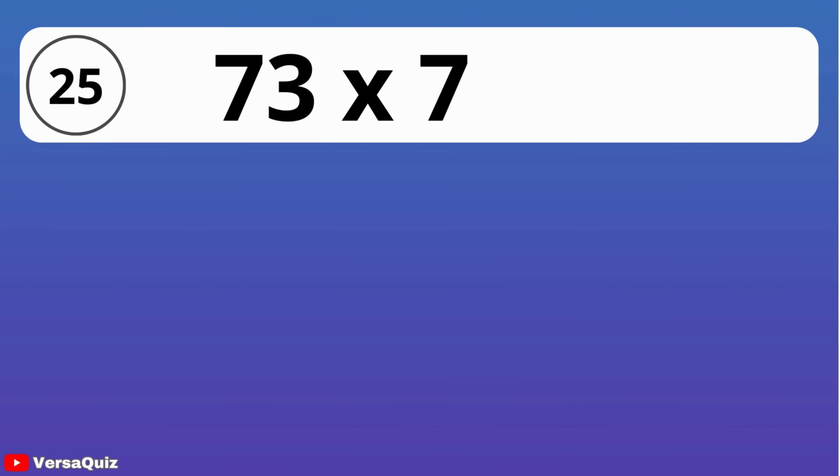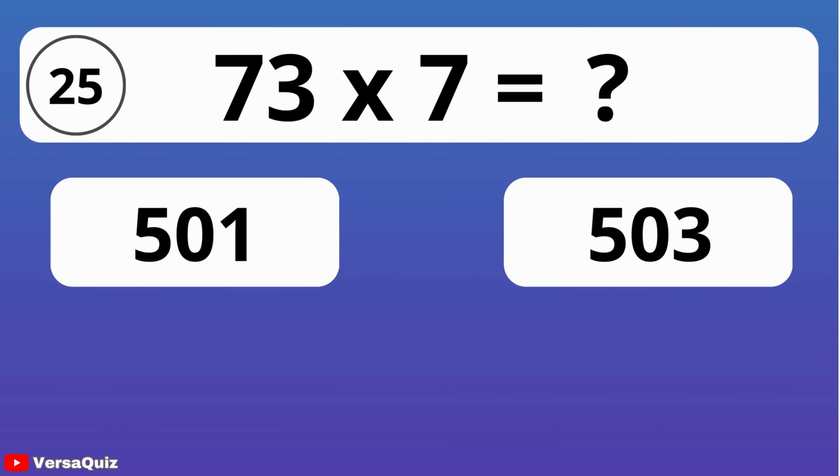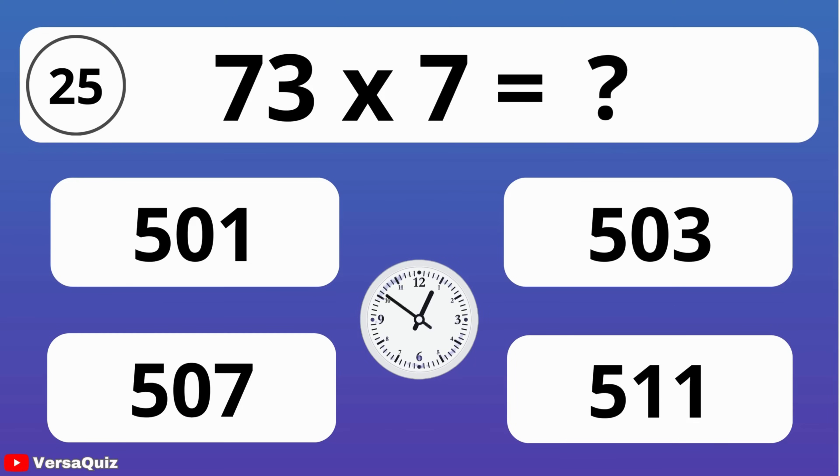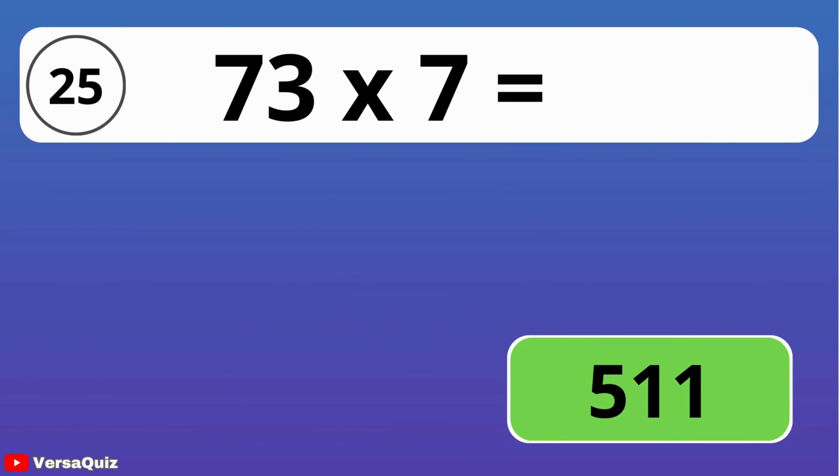What is 73 times 7? Decide on the right answer from the given options in the next 7 seconds. 73 times 7 is equal to 511.